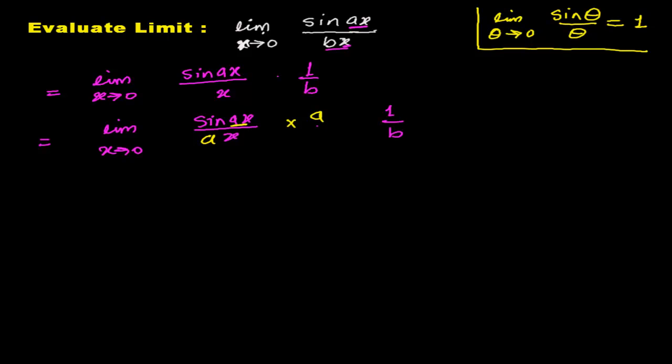Now we're getting the standard result: sine of angle over the angle. But one more problem: I told you when angle tends to 0. Here x tends to 0, but now we need ax tends to 0. When x tends to 0, automatically ax tends to 0. When x tends to 0, whatever you multiply by—a, b, h, c, t, whatever—it automatically will be 0.